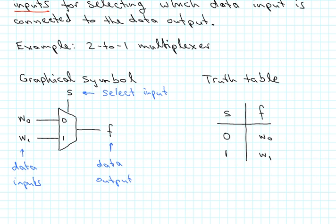Here is an example of a 2-to-1 multiplexer, that is the simplest kind of multiplexer with two data inputs. The graphical symbol is shown down here, and W0, W1, those are the two data inputs, F is the data output and S is the select input here.